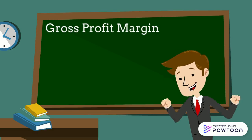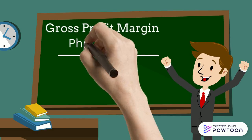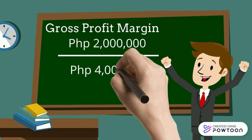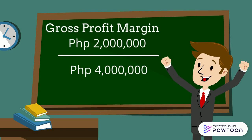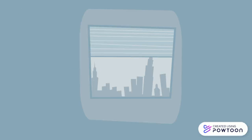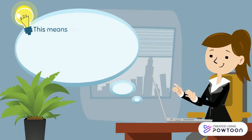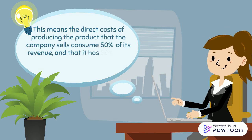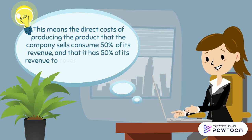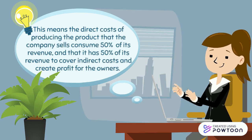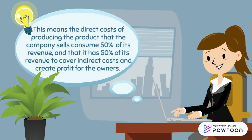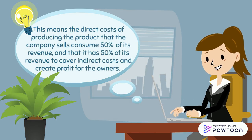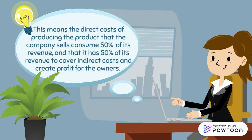Next, gross profit margin: 2 million pesos divided by 4 million pesos equals 0.5. This means that direct costs of producing the product consume 50% of its revenue, and the company has 50% of its revenue to cover indirect costs and create profit for the owners.